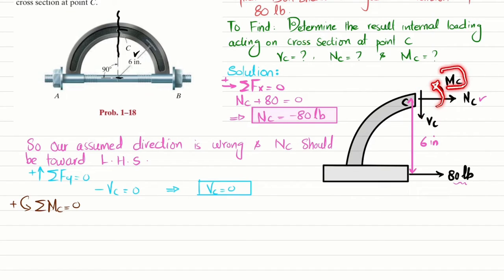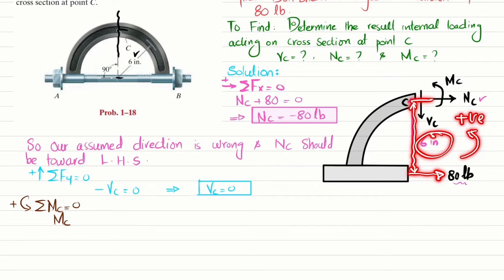The moment produced due to this 80 pound force times the perpendicular distance about point C is 6, so Mc plus 80 times 6 equals zero, which is also producing counter-clockwise moment, so it will be positive.